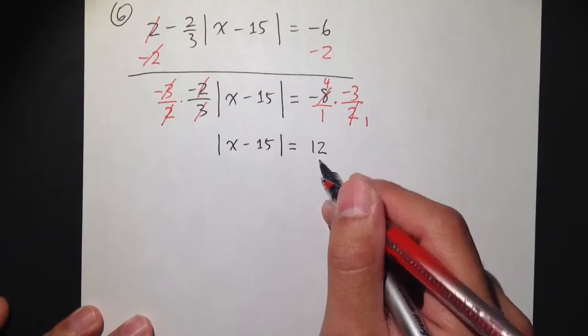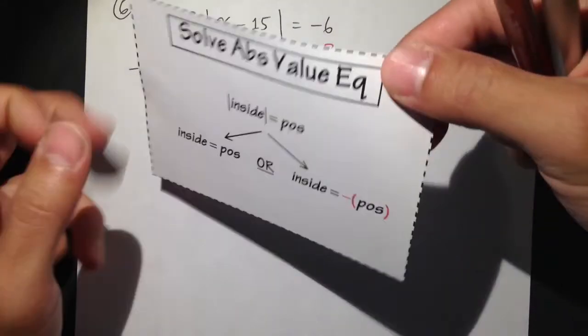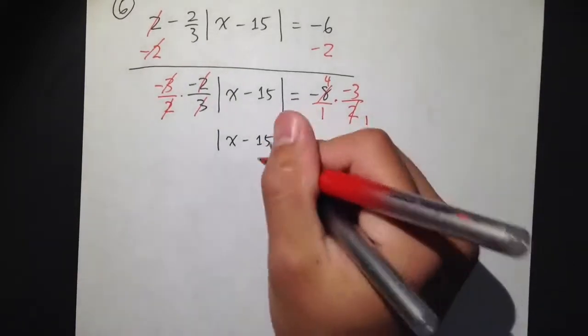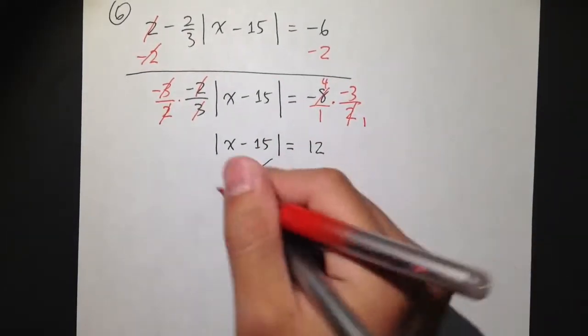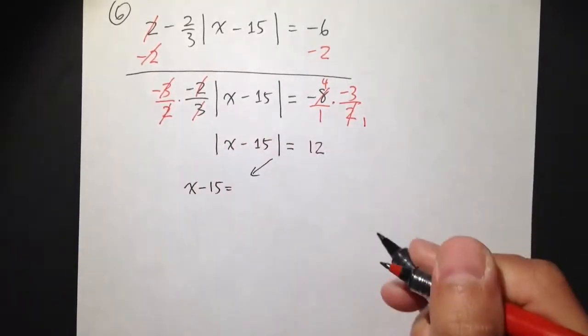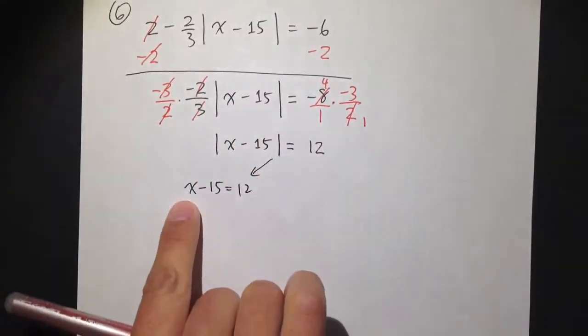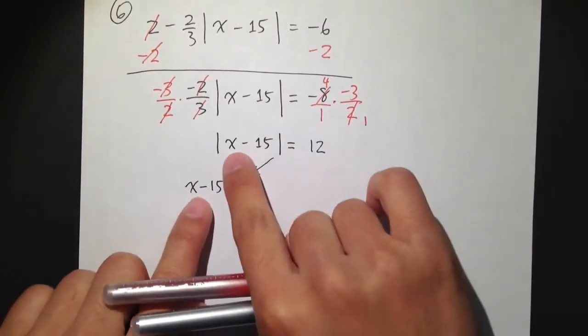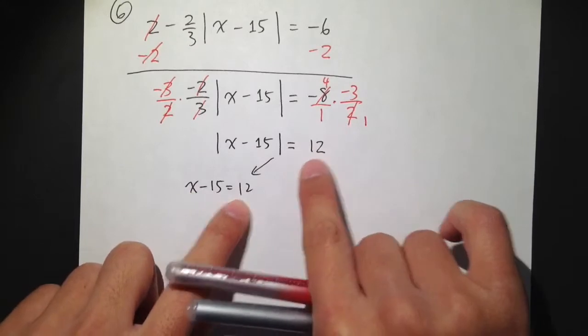It's equal to a positive number. Then I can do this. I can do this. So the first equation, I will just take out the absolute value. The inside never change. X minus 15. The inside never change. The inside is equal to that positive number.